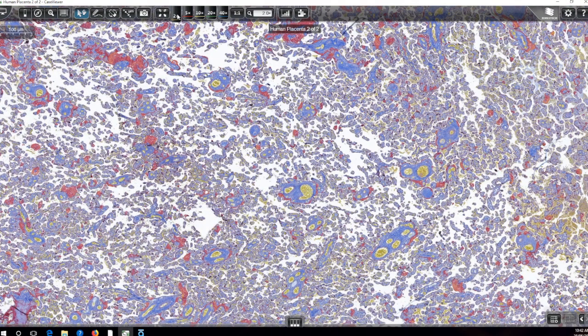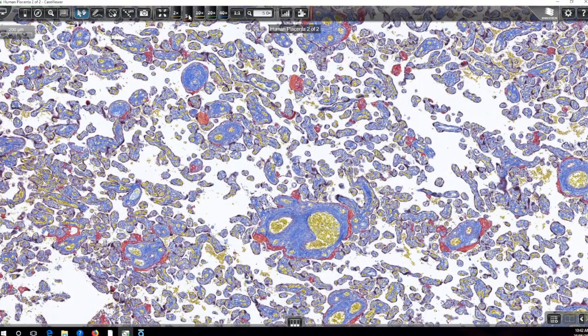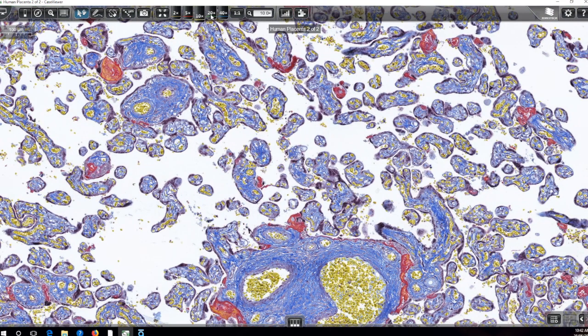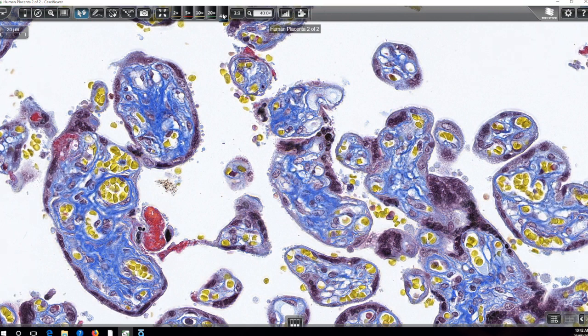So we can do that by clicking on these virtual lenses, so 2x or 5x or 10x, etc. And as we begin to increase the magnification, you can see that's a really nice outcome. For the MSB, we've got some nice red fibrin, vibrant blue collagen, nice strong nuclei, and some yellow red blood cells.